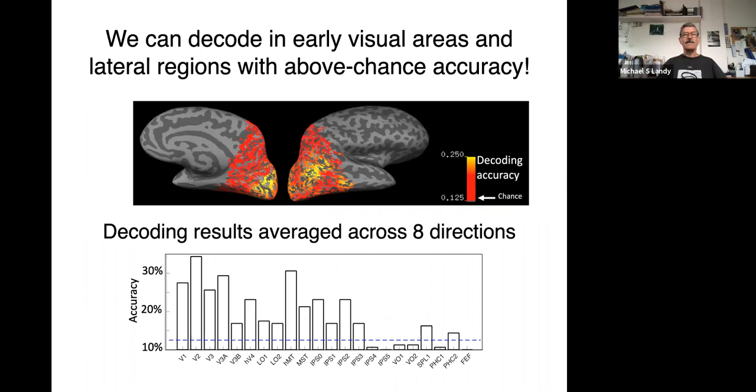Below, we show that there's above chance performance, where chance is guessing one in eight. So above chance performance in lots of typical delineated regions, including in the middle there, HMT, which is an area that's often described as specifically analyzing motion. So that's one area we're working on.